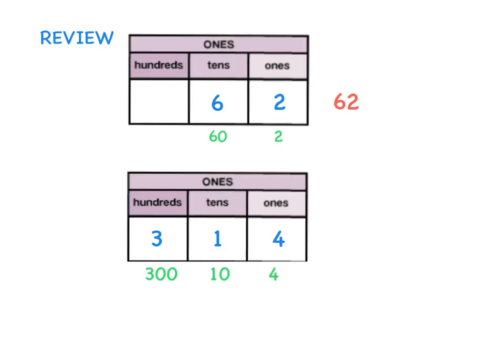In the next number, you see that the digit 3 is in the hundreds place. This means it has the value of 300. The digit 1 is in the tens place, so it has a value of 10. The digit 4 is in the ones place, so it has a value of 4. Together, these 3 digits make the number 314.